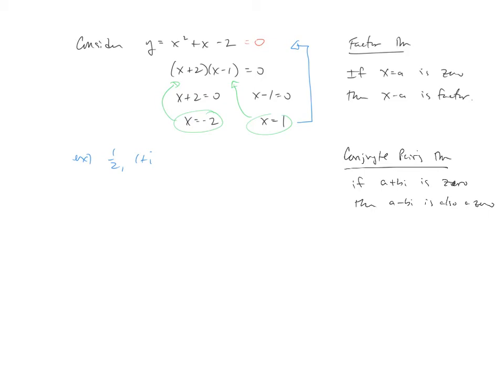So back to our problem, we're given one half and one plus i. Even though it's not stated, it's assumed that we know also to include the one minus i.